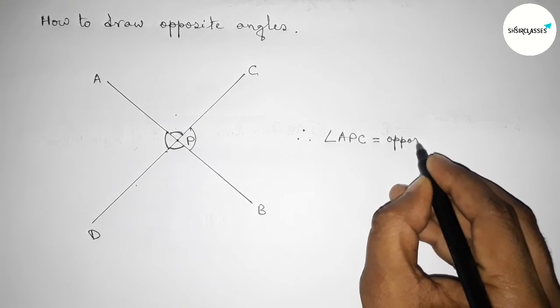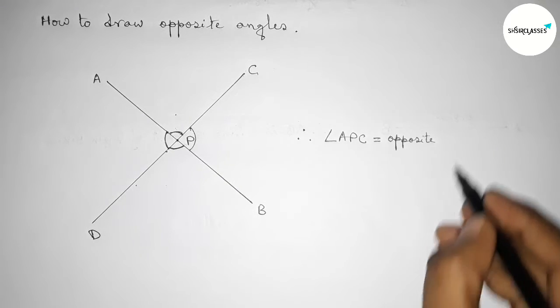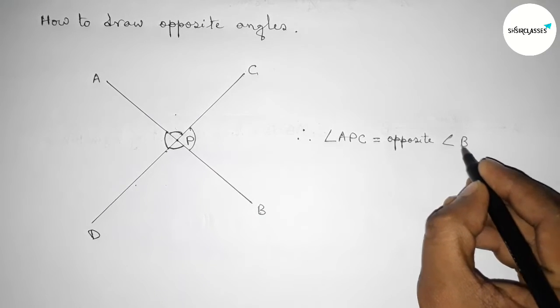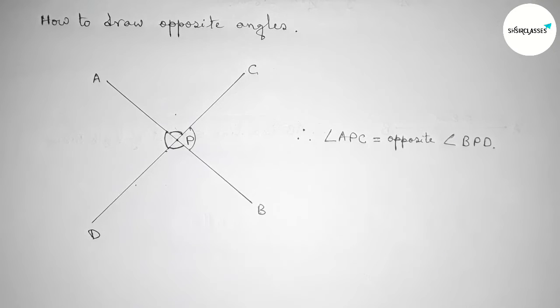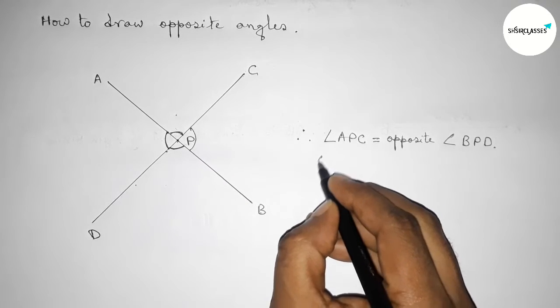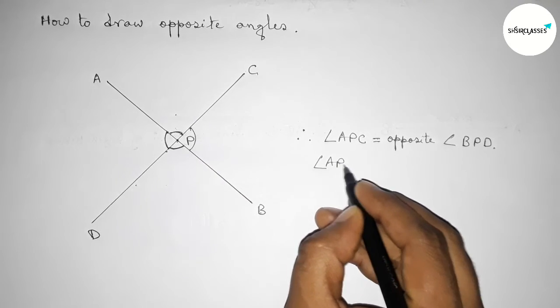Okay, again here angle APD, so angle APD - and the opposite angle of APD equals to angle BPC, so angle BPC.